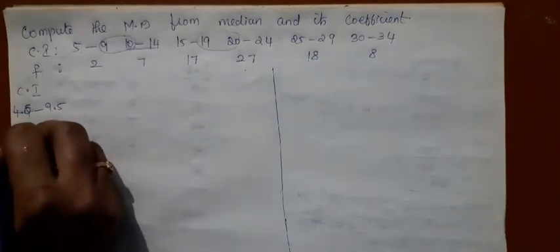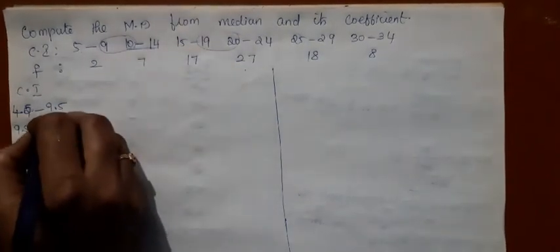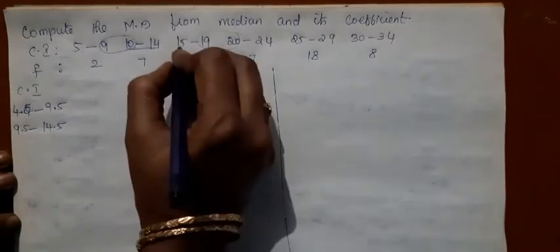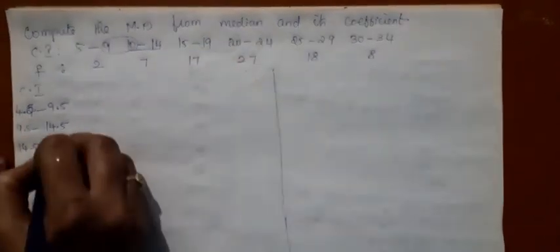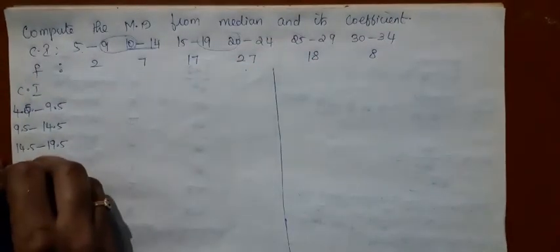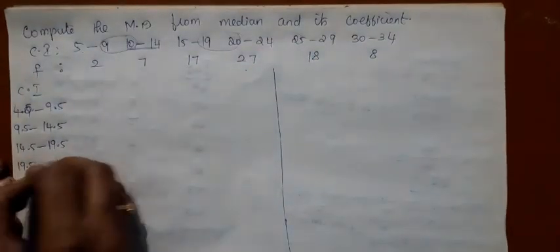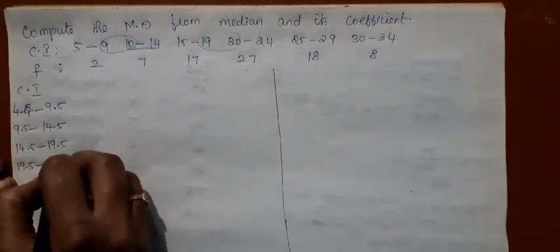Reduce 0.5. This is the upper limit. Add 0.5. Here 14.5 plus 19.5. Reduce 20 minus 0.5, 19.5. Add 24.5.